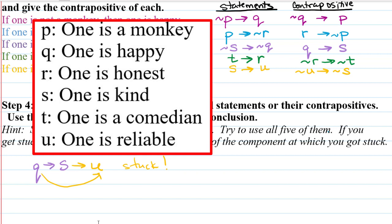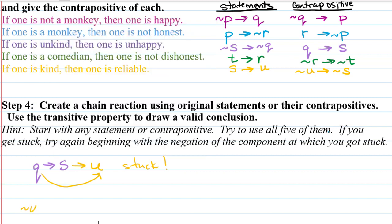But what we want to do is use all of the information to come to a conclusion. So when you're stuck, reverse it. Think of the contrapositive. So think of not U implies not S. We're going to begin with where we ended, but the negation of it.